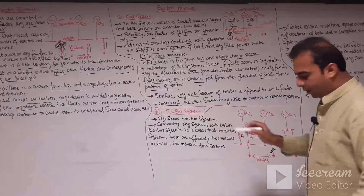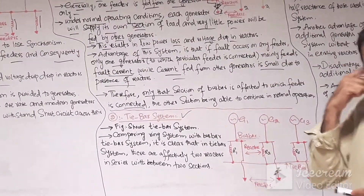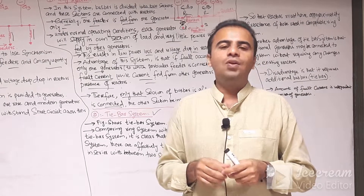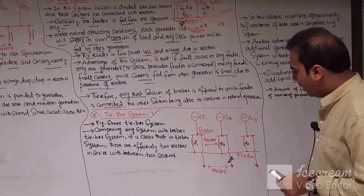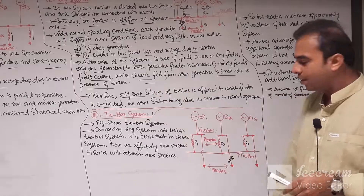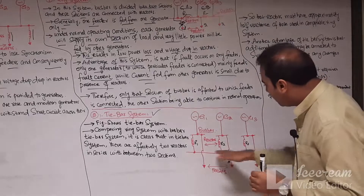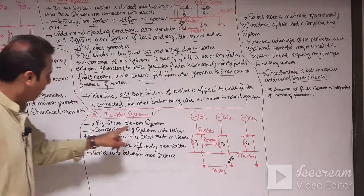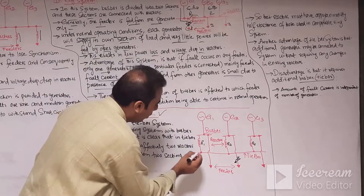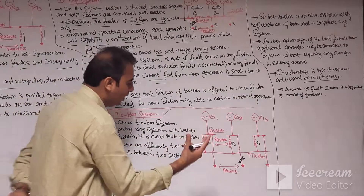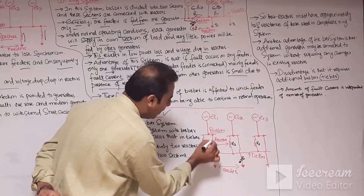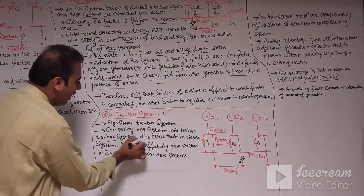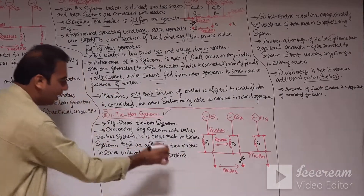Now let us discuss the tie bar system. For future expansion in the electrical power system where additional generators are connected in parallel, we use the tie bar system. The tie bar system is another type of bus bar reactor where an additional tie bar is needed, with reactors connected in series with the generators. Comparing the ring system with the tie bar system, it is clear that in the tie bar system there are effectively two reactors connected between two sections.